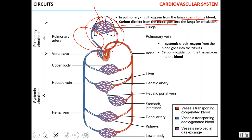Oxygenated blood returns to the heart, and the heart pumps oxygenated blood to all the tissues in the body. In the systemic circuit, oxygen from the blood goes into the tissues, while carbon dioxide from the tissues goes back into the blood to be transported to the lungs for exhalation.